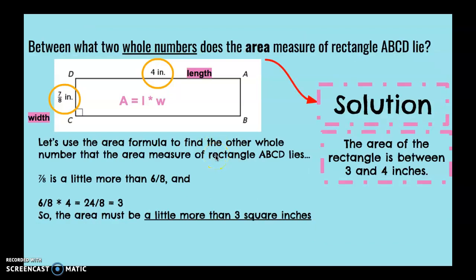We can also use the area formula to find the other whole number that the area measure of rectangle ABCD lies between. 7/8 of an inch is also a little bit more than 6/8, so if I multiplied 6/8 times 4 I would get 24/8, which I can reduce to the number 3. So the area must be a little bit more than 3 square inches.